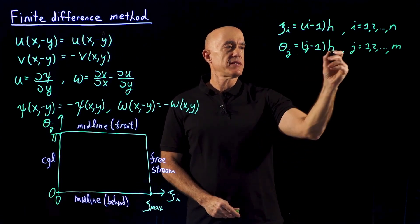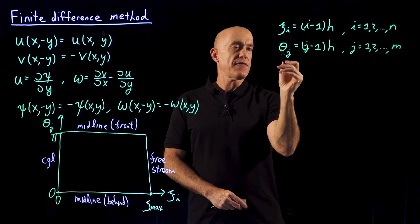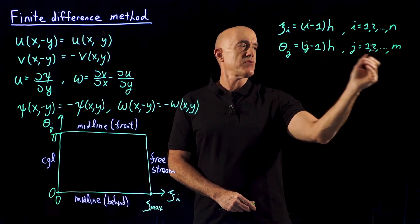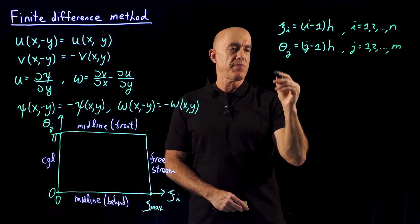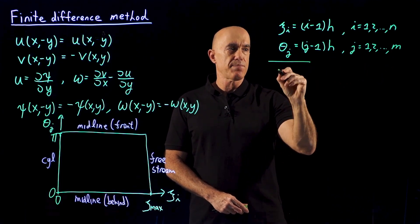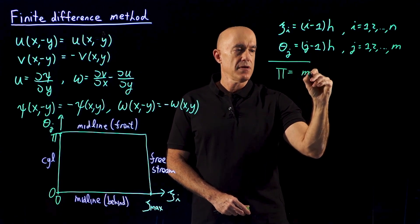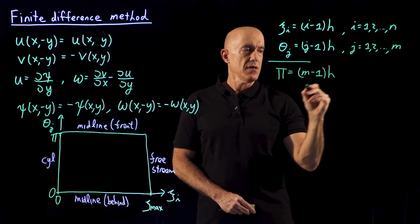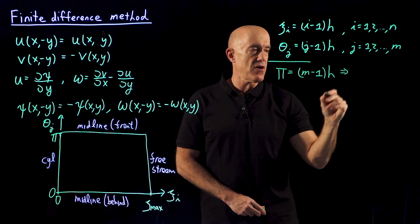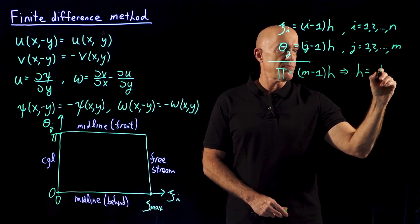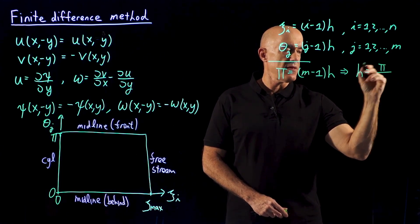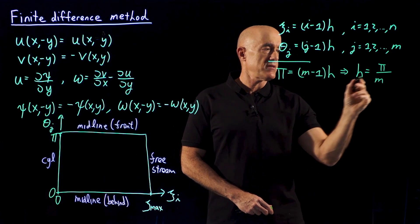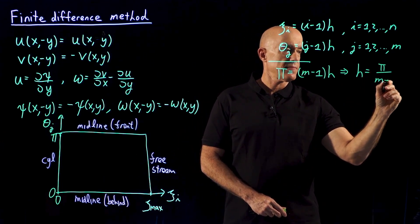So what is this grid spacing h? We know that θ goes from 0 to π. So when j equals m, θ has to be π. So we know that π = (m-1)h, which tells us that our grid spacing h = π/(m-1).